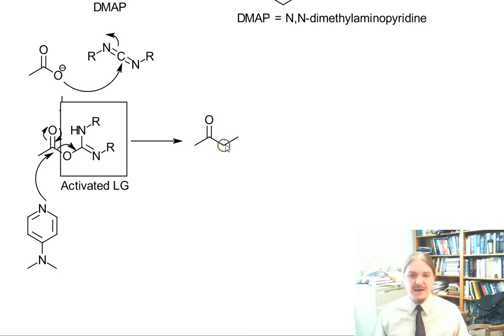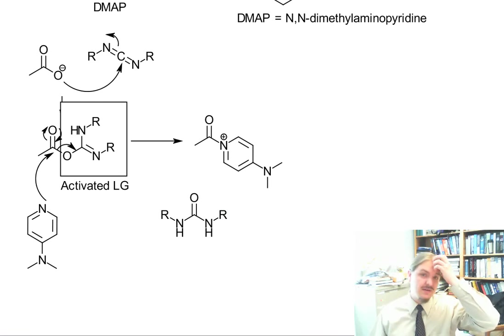And so then it just happens that DMAP or the pyridine compound is a better nucleophile than the alcohol, and then it also happens to be a better leaving group than the urea that comes off. So here's just the other leaving group, so you actually make this urea, which depending on what R is can even be water soluble to facilitate purification. The cyclohexyl version isn't particularly water soluble.